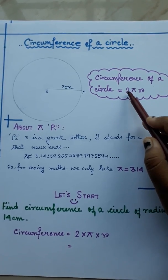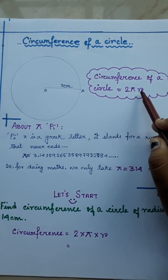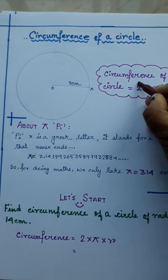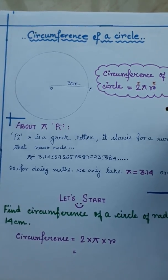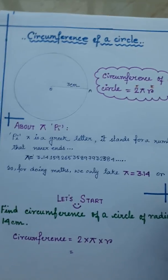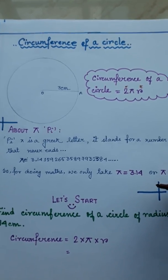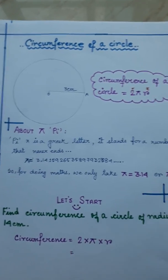That means 2 into pi into r. Now, we know what is 2r. But what is pi? That we don't know. Let us find out what is pi.